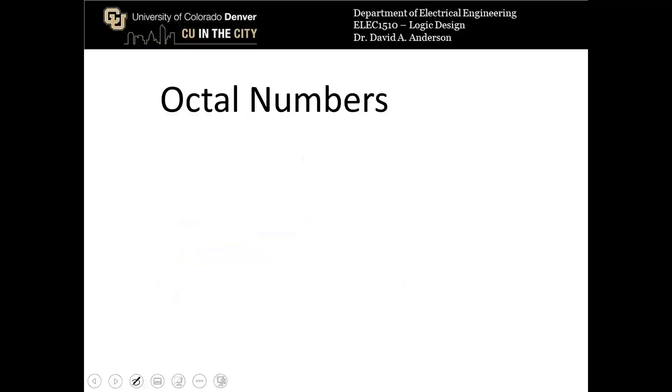Octal numbers are another number base that we use in this class and in computer design. Octal numbers are base 8 numbers, so each place in an octal number is a power of 8. We have 8 digits that we can use, so again, whatever the base is, that's how many digits you have to represent. 0 through 7 are going to be the different digits that we can use in octal numbers.